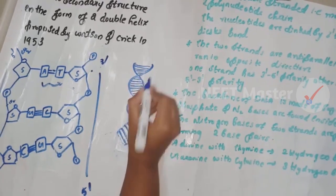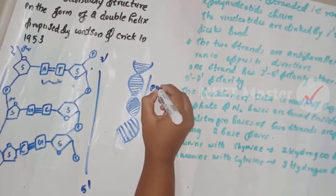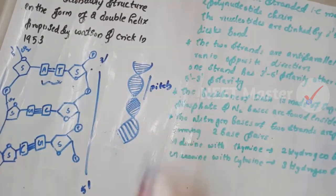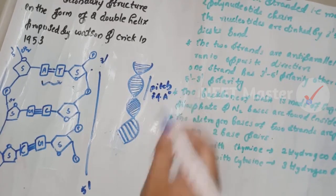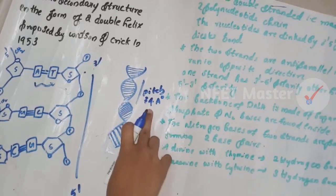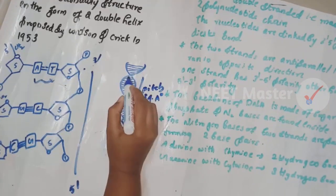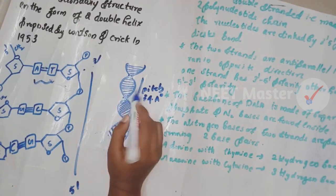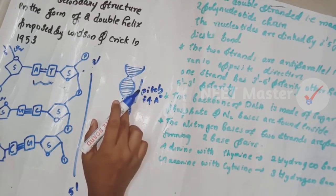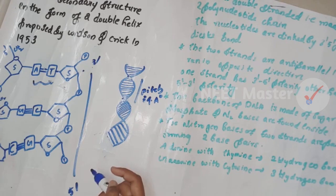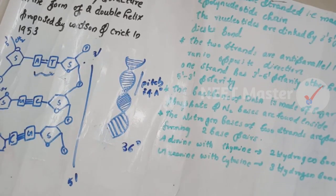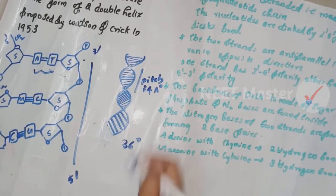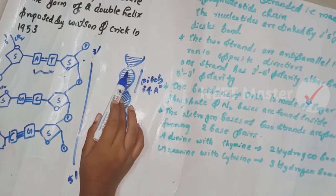The label is called pitch. The pitch is 34 angstroms (angstrom = 10⁻¹⁰ m). This is the distance of one full turn, which is 360 degrees. One turn covers 36 degrees per base pair, meaning there are 10 base pairs per turn.